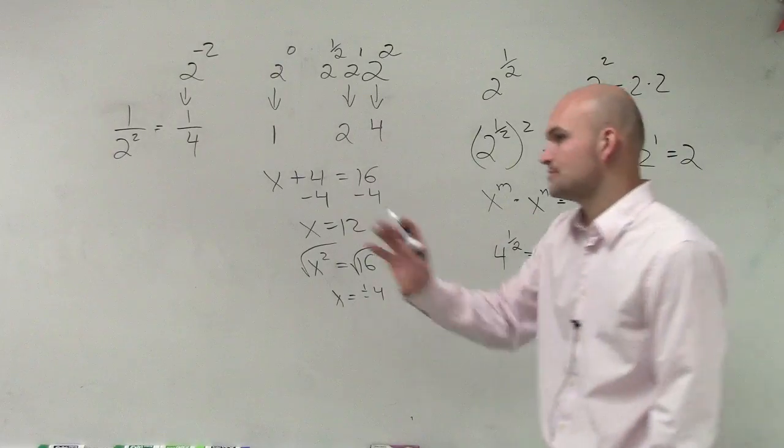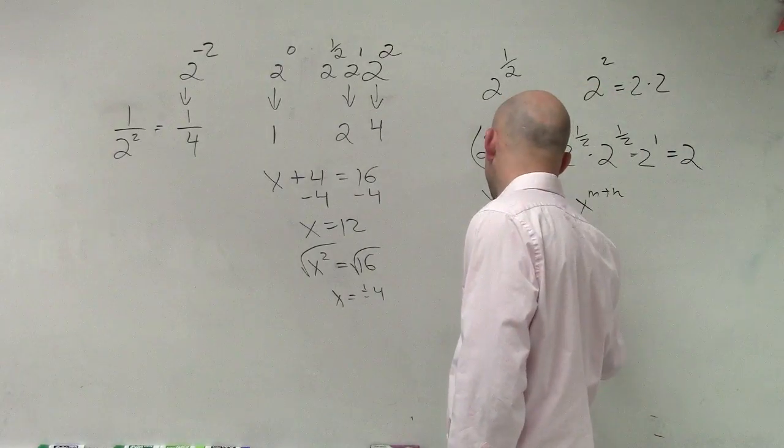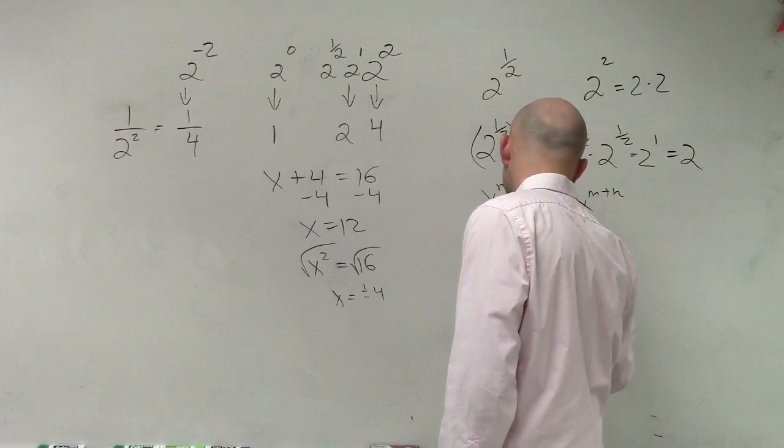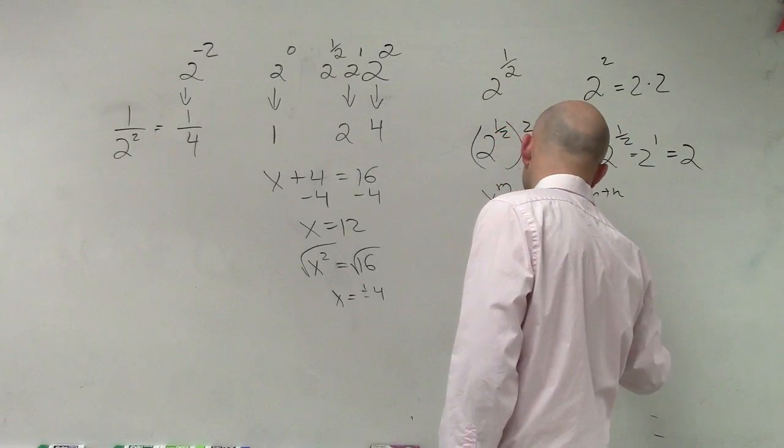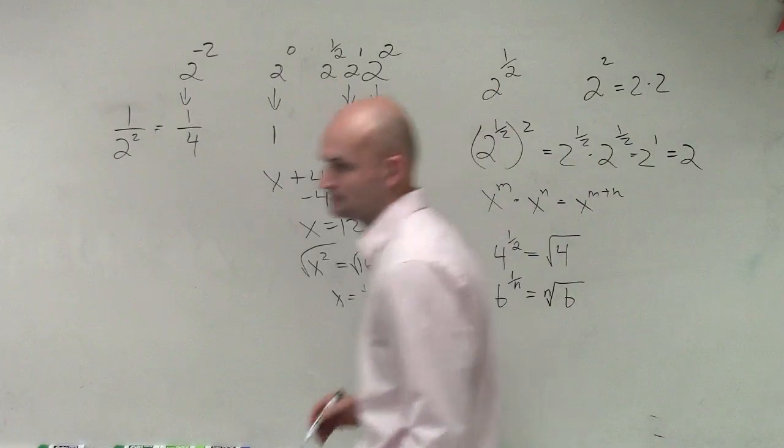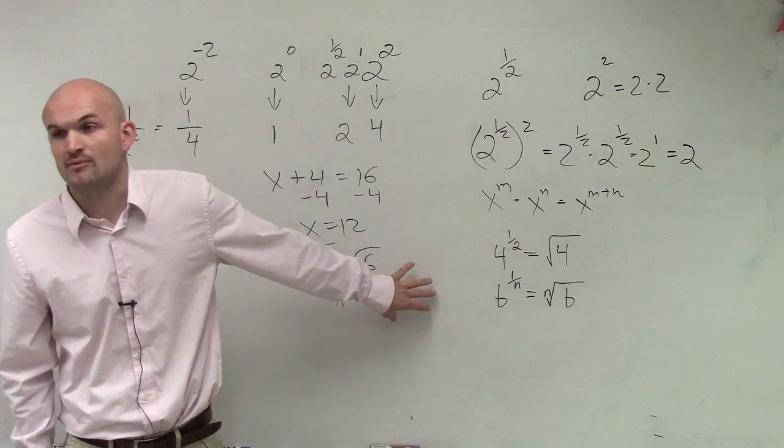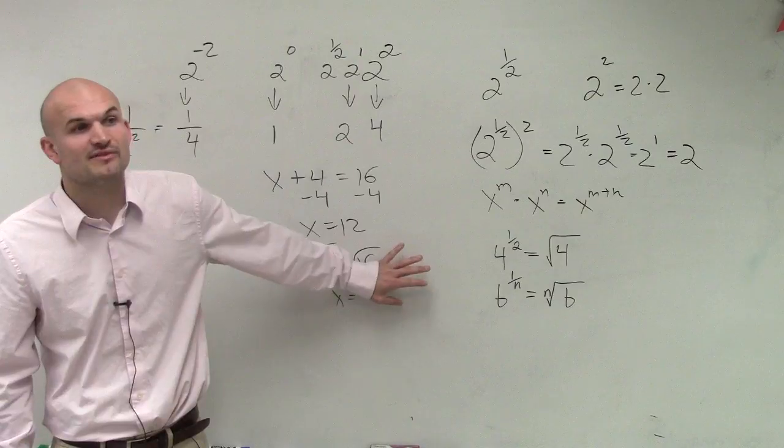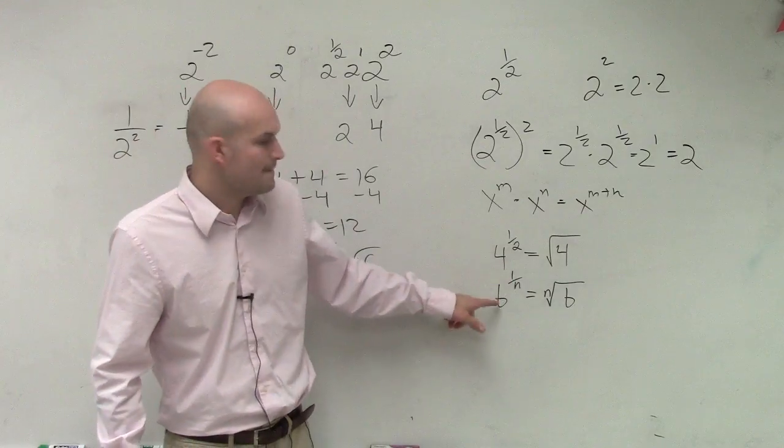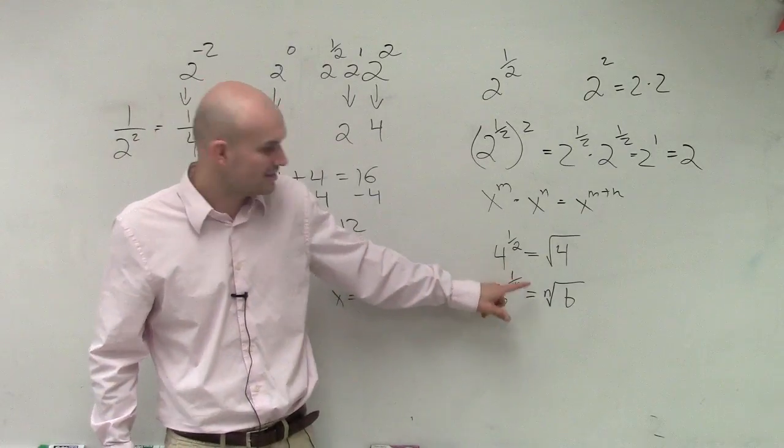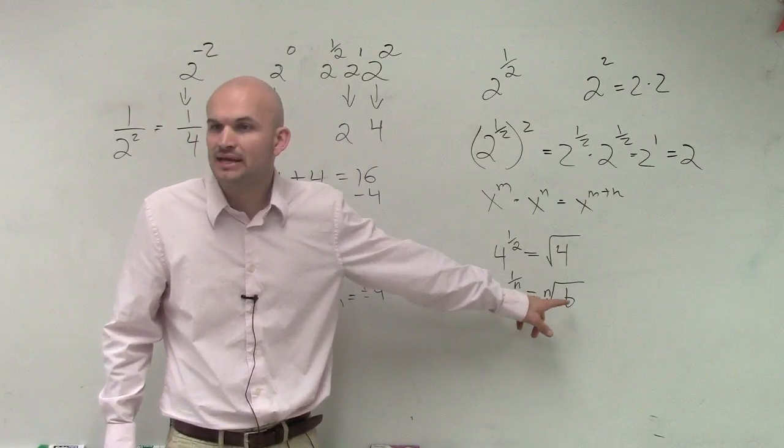So there's something I want you guys to write down. Here's your rule. b to the 1 over n is equal to the nth root of b. So you're going to want to write that down to have this in your notes. This is going to be very crucial in your notes. b to the 1 over nth power is equal to the nth root of b.